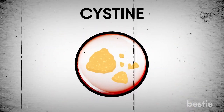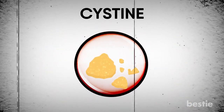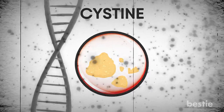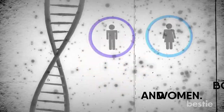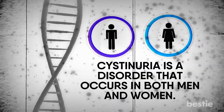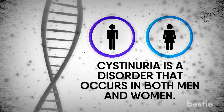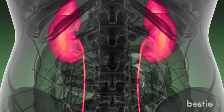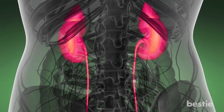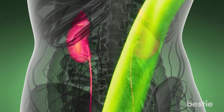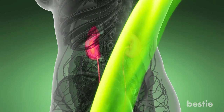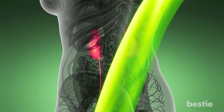Cysteine: this is a rare type because the genetic disorder causing it is rare in itself. Cystinuria is a disorder that occurs in both men and women. This type of stone is formed when a naturally occurring body acid, cystine, starts leaking from the kidneys into the urine.